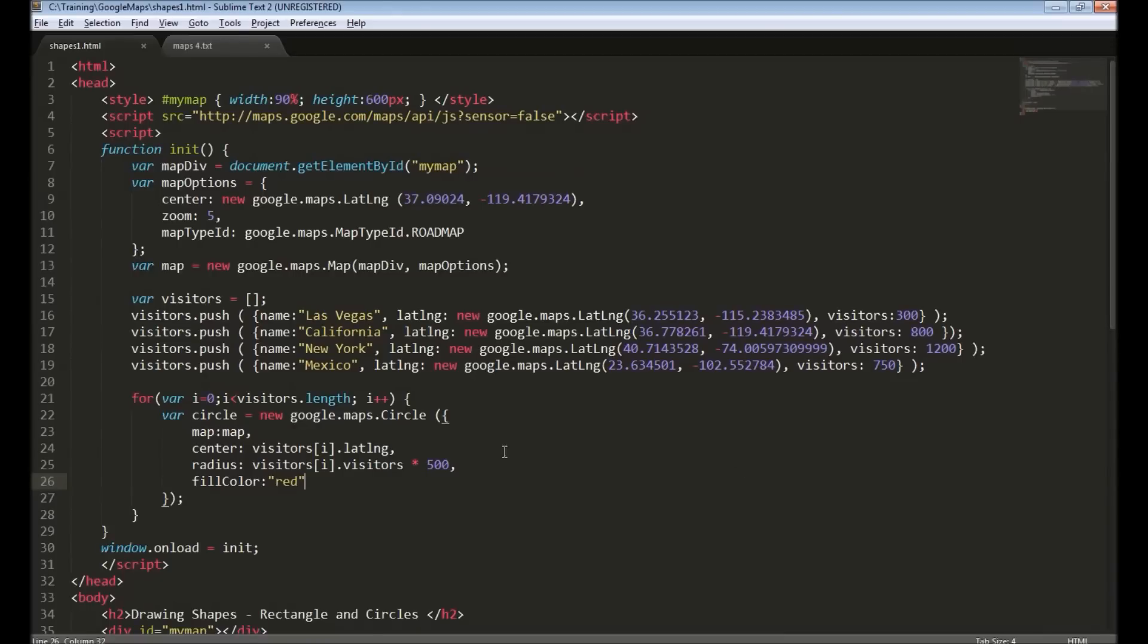We can draw different colors depending on the data we have. Visitors having more than 500 we can draw it in green color. And there are lot of things we can do using these available options.